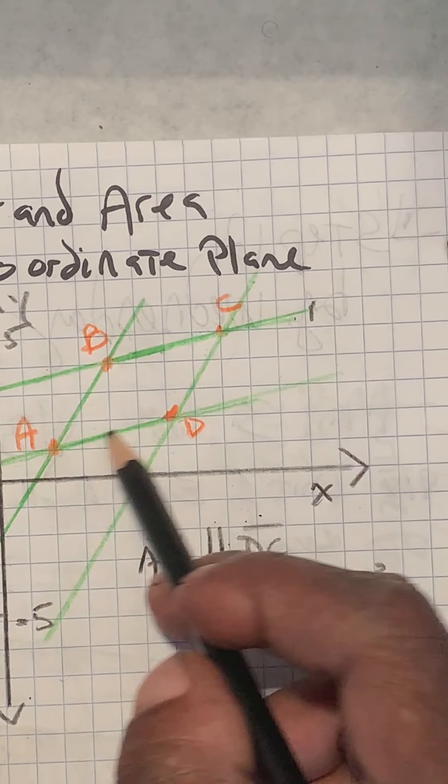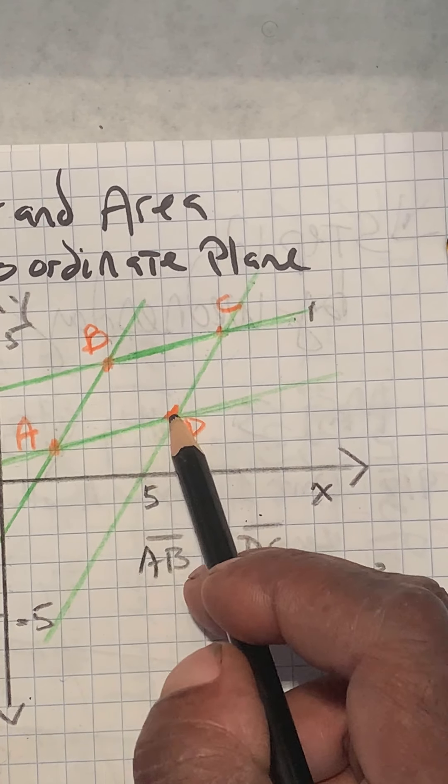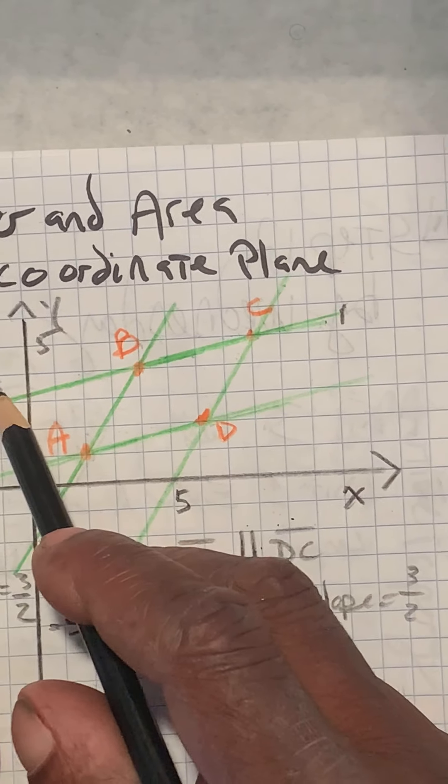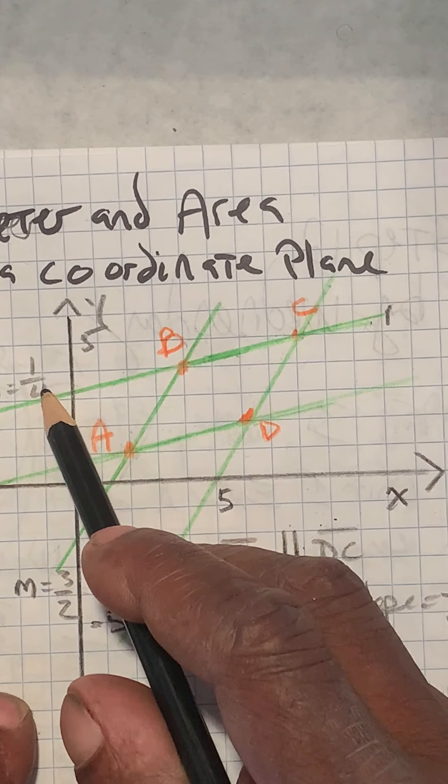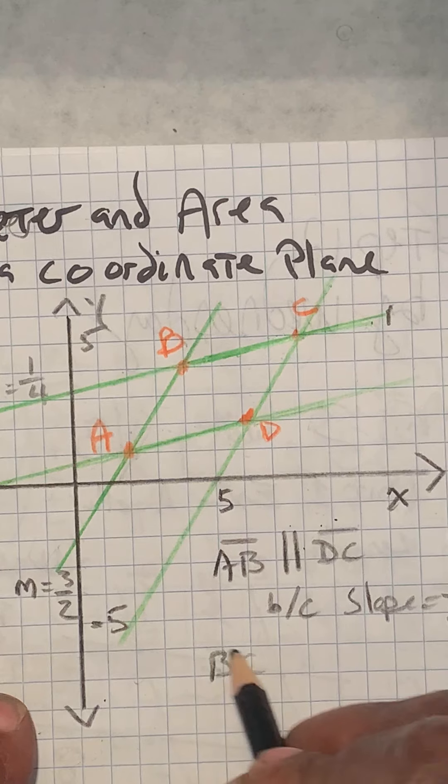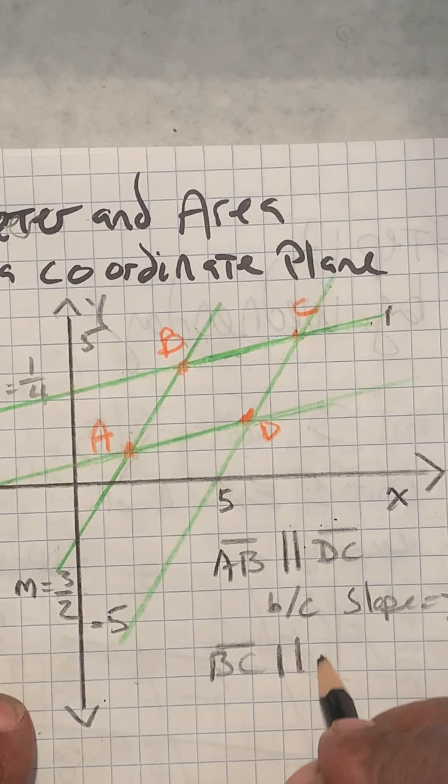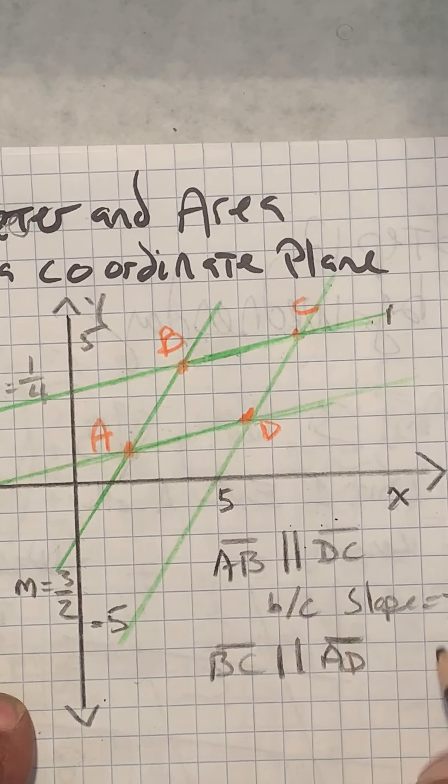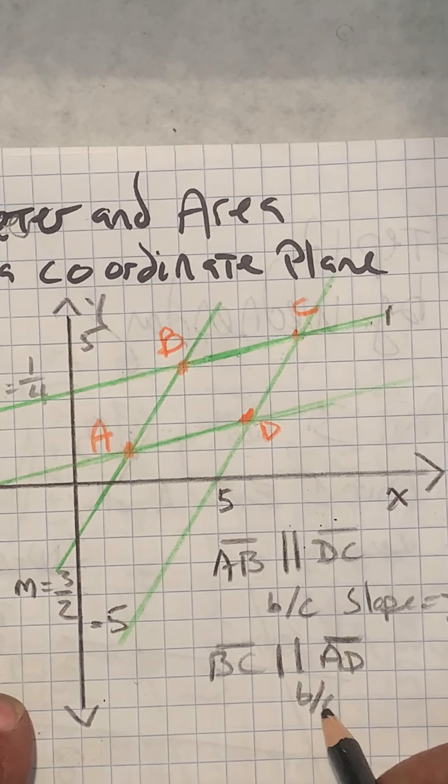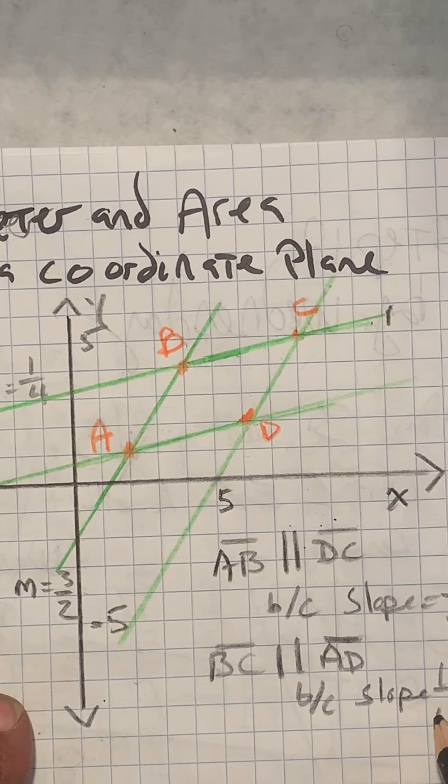And let's check AD. Up one, two, three, four to the right. It also has a slope of one fourth. So we know that BC is parallel to AD, both have a slope of one fourth.